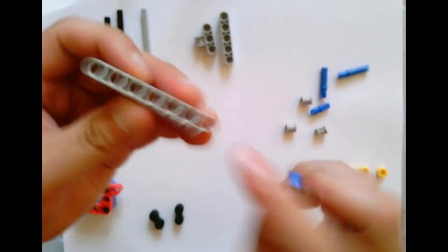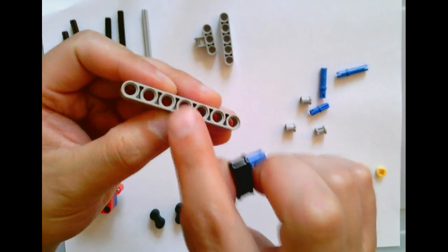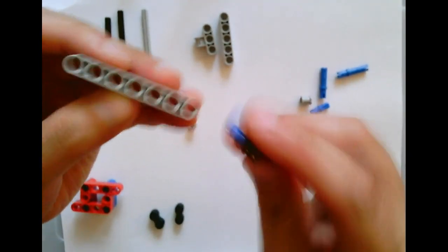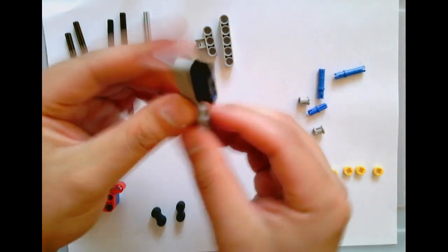Then you're going to take a one, two, three, four, five, six, seven hole piece like this and snap these two together like so.